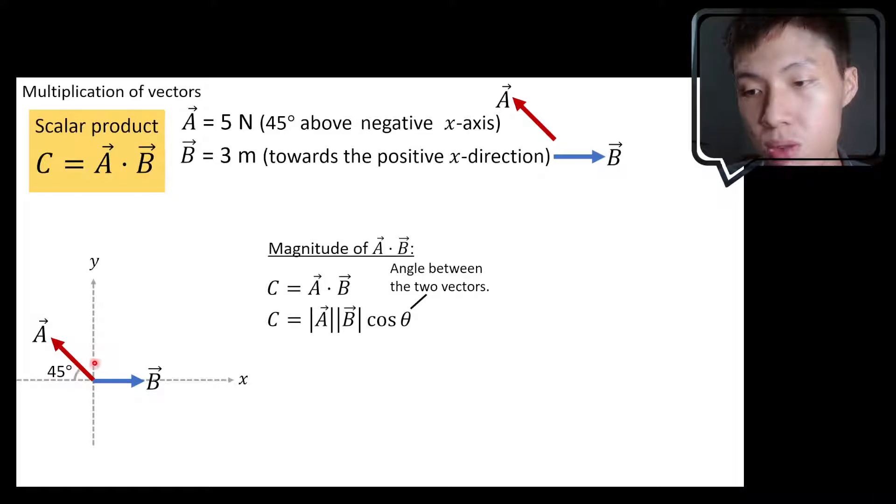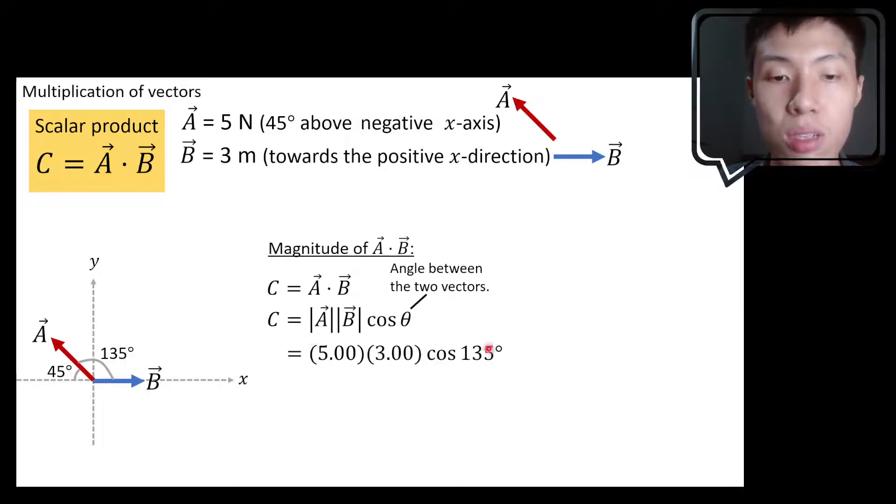This is 180 right, from here to here is 180 minus 45, we get 135 degrees. That's the angle between the two vectors and that is what we substitute in to replace θ.